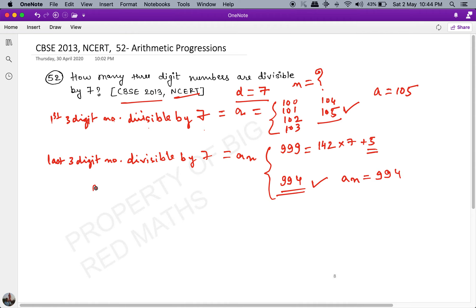Now we have to find the value of n using the formula a_n = a + (n-1) × d. So 994 = 105 + (n-1) × 7, where n is what we need to find.